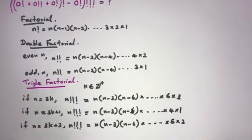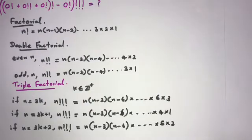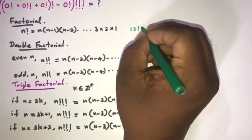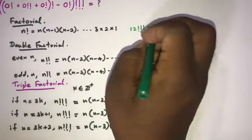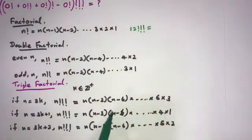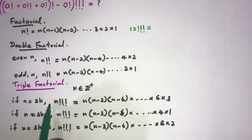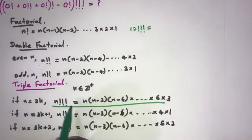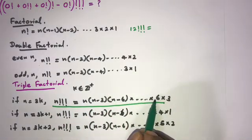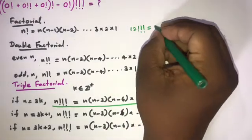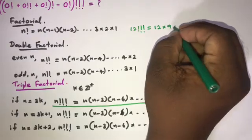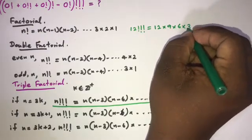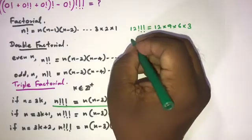Let's look at some examples. For 12 triple factorial: since 12 = 3 × 4, we use the first formula, giving 12 times 9 times 6 times 3.